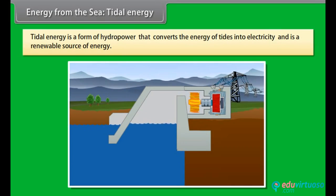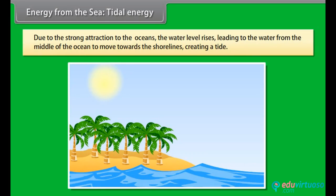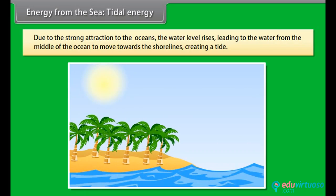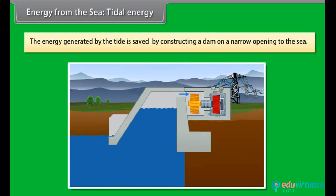Energy from the sea — Tidal energy. Tidal energy is a form of hydropower that converts the energy of tides into electricity. It is a renewable source of energy. Tidal energy is extracted from oceanic tides. Tidal forces are periodic variations in gravitational attraction exerted by the moon, which creates motions or currents in the oceans. The water level rises, causing water from the middle of the ocean to move towards the shorelines, creating a tide. This is an unfailing occurrence due to the consistent pattern of the moon's orbit around the earth. The energy generated by the tide is saved by constructing a dam on a narrow opening to the sea, and a turbine is fixed at the opening of the dam to convert tidal energy to electricity.